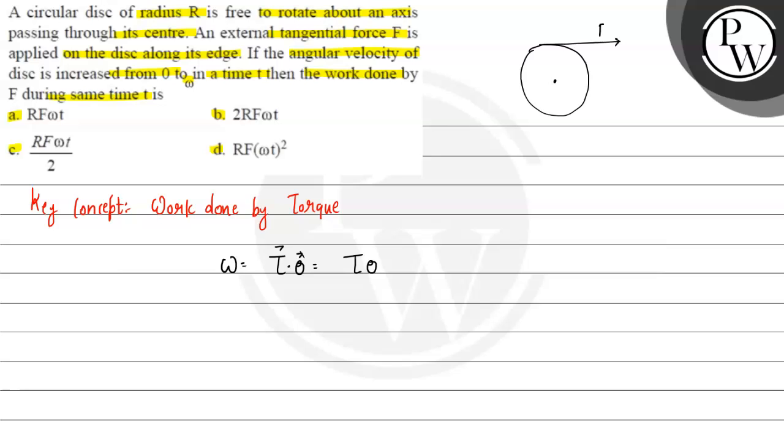If the angular velocity of the disk is increased from zero to omega, it increases to omega, how much time does it take? It takes time t. So you can find out alpha using the relation.